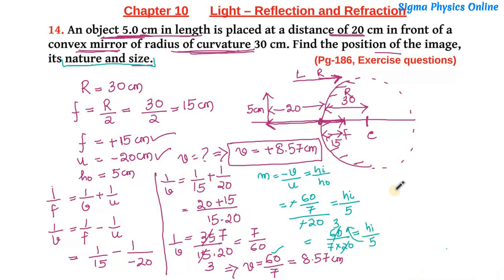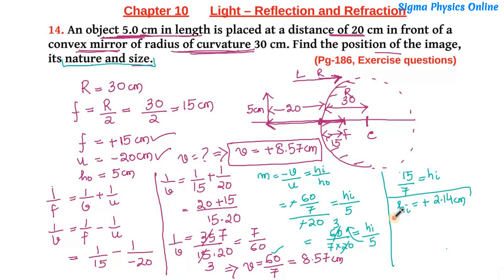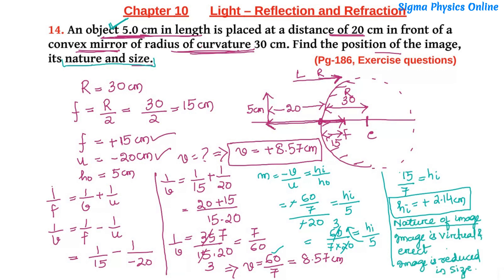The negatives cancel: m = (60/7) / 20 = 60/140 = 3/7. Setting this equal to hi/5 and cross-multiplying gives the height of image = 5 × 3/7 = 15/7 = +2.14 cm. The positive sign indicates the image is virtual and erect, and since 2.14 cm is less than the object height of 5 cm, the image is reduced. So the image is virtual, erect, and diminished.